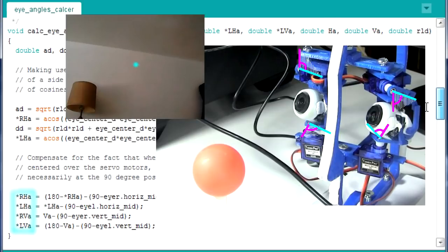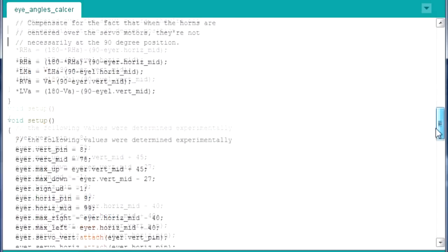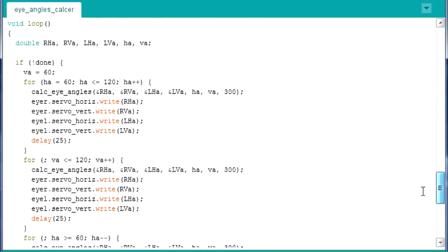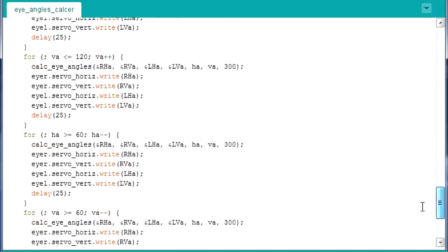And then you tell it the distance to the point. The routine then calculates what angles to set the four servo motors to, in order to have both cameras centered on that one point. And here are the loops, which call that routine, to make the eye look around the room, and then at the ball.